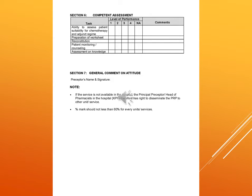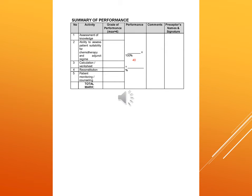If the service is not available in the hospital, the principal preceptor or head pharmacist has the right to assess the abilities of a PRP. The percentage mark should not be less than 60% for every unit or service. The summary of performance includes activities such as assessment of knowledge, ability to assess patient suitability for chemotherapy, calculation and worksheet, patient monitoring and counselling, with grade of performance calculated as performance multiplied by 100% divided by 40. Comments from the preceptor and preceptor's name and signature conclude the oncology section.